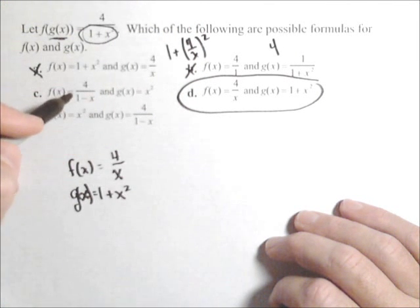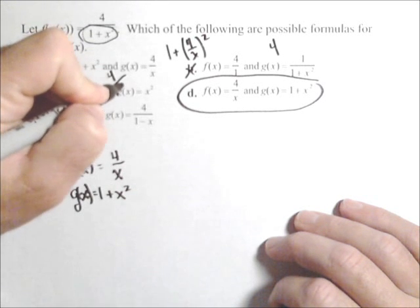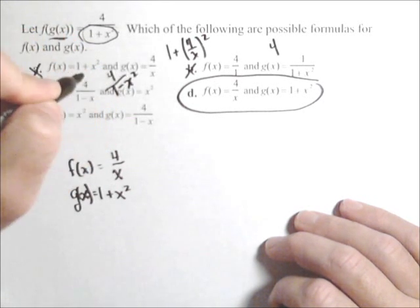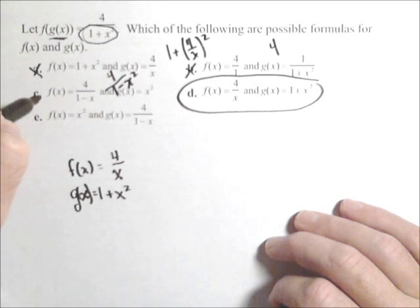C, if we put that in there, the only problem with c is that we'd end up with four over one minus x squared, but we need plus. If this had been a plus, c would have worked as well. So c doesn't work.